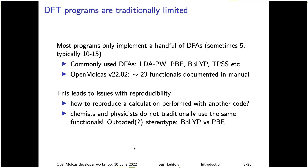If you look at programs, usually they only implement something like five or ten functionals. I looked at the OpenMolcas version 22.02 manual and could count something like 23 unique functionals — exchange, correlation, or exchange-correlation functionals. Typical ones include LDA, PBE, B3LYP, TPSS, and so on. OpenMolcas previously did not implement anything above GGAs.